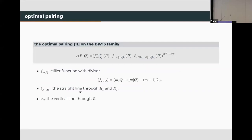We now move on to pairing computation. The optimal pairing is the best choice for many pairing-friendly curves. Here, we give the formula of the optimal pairing for the BW13 family. We use f_{m,Q} to denote a rational function whose divisor is given in a specific way, and we call this the Miller function. We use L to denote a straight line function and v to denote the vertical line function. Pairing computation in the BW13 family largely comes from the two Miller function evaluations and the final exponentiation.